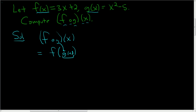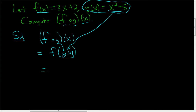You want to replace little g with what it actually is. So here is little g right here, and this is going to go right there. So this is equal to f of — and we're making this replacement — so it'll be x squared minus 5.